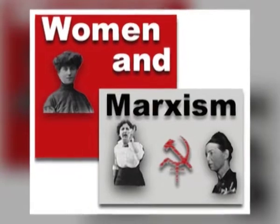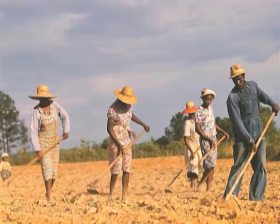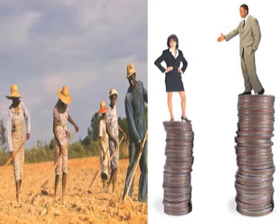Materialist feminism begins around the 1990s under the influence of Marxism. It focuses on social conditions, specifically questions of labour, wage, political power, voting rights, and welfare. The focus in materialist views of gender has to do with the social, labour, economic, and political conditions in which the genders are placed. Think of the question of wages — are men and women paid the same wage for the same kind of work? Historically, that has not been the case. Women have been paid less for doing the same work as men, not because of biology, but because of socially constructed expectations.